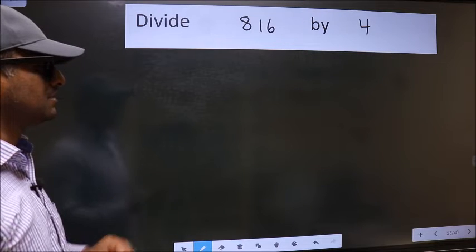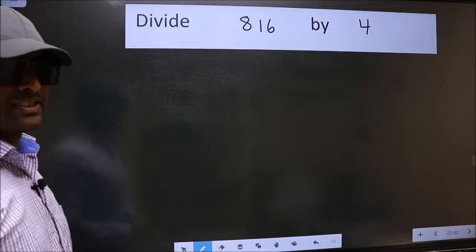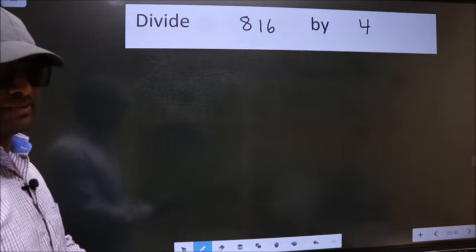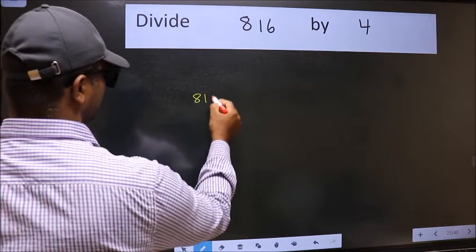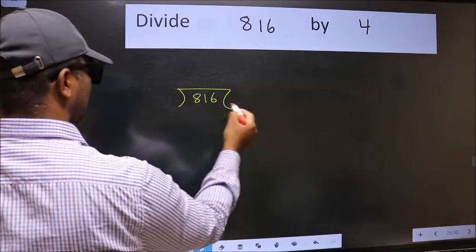Divide 816 by 4. To do this division, we should frame it in this way: 816 here and 4 here.